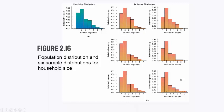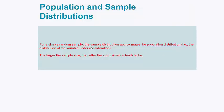So what you would do is estimate the population distribution by taking samples of households in the United States. These six histograms represent six different samples. If you look at the sample data collected, the histograms look pretty close to the population distribution, but they're not exactly the same. What we're seeing is that sample distributions, while they don't get it 100% right, all do a pretty good job estimating what the population distribution looks like. For a simple random sample, the sample distribution approximates the population distribution, and the larger the sample size, the better the approximation tends to be.